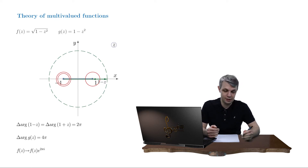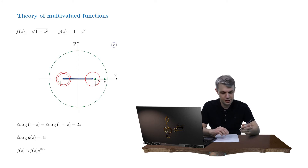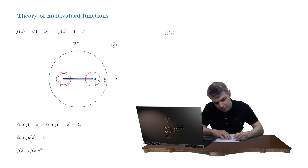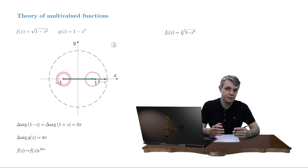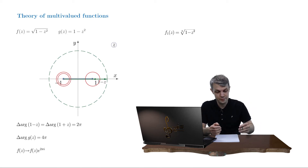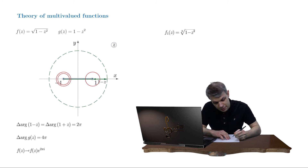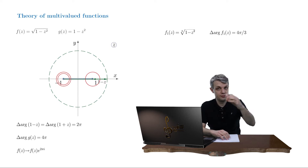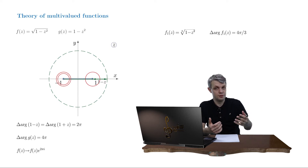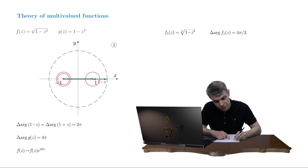The answer is absolutely yes. Let's consider a slight modification: f1 of z equals the cubic root of 1 minus z squared. Traveling along the same closed curve, everything stays the same — the delta argument of g is again 4pi. But this time the function's argument changes by 4pi over 3. So after a full rotation, the modulus returns to its original value, but f returns to f multiplied by e to the power of 4pi over 3 — it is not single-valued.